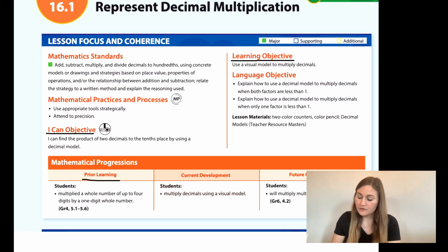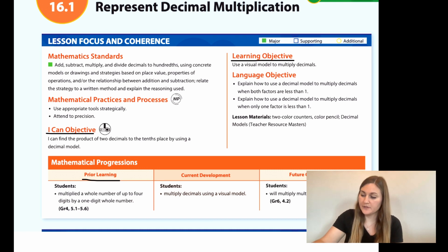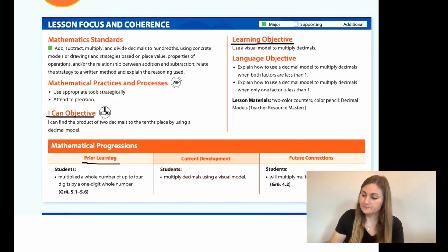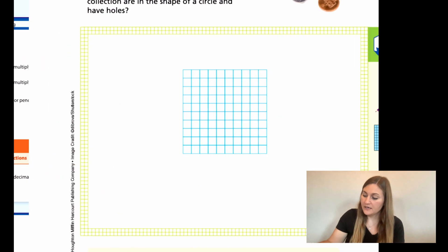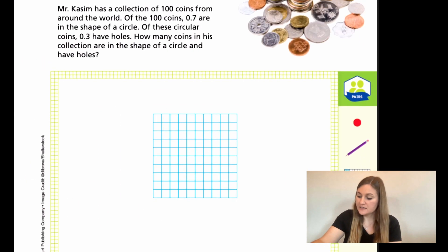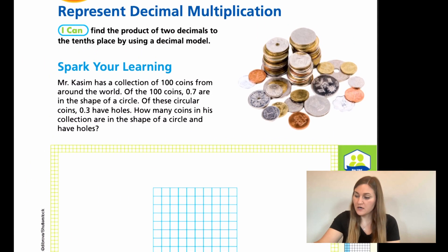Prior learning is that students multiplied a whole number of up to four digits by a one-digit whole number. Alright, so moving into lesson, we're on page 401.